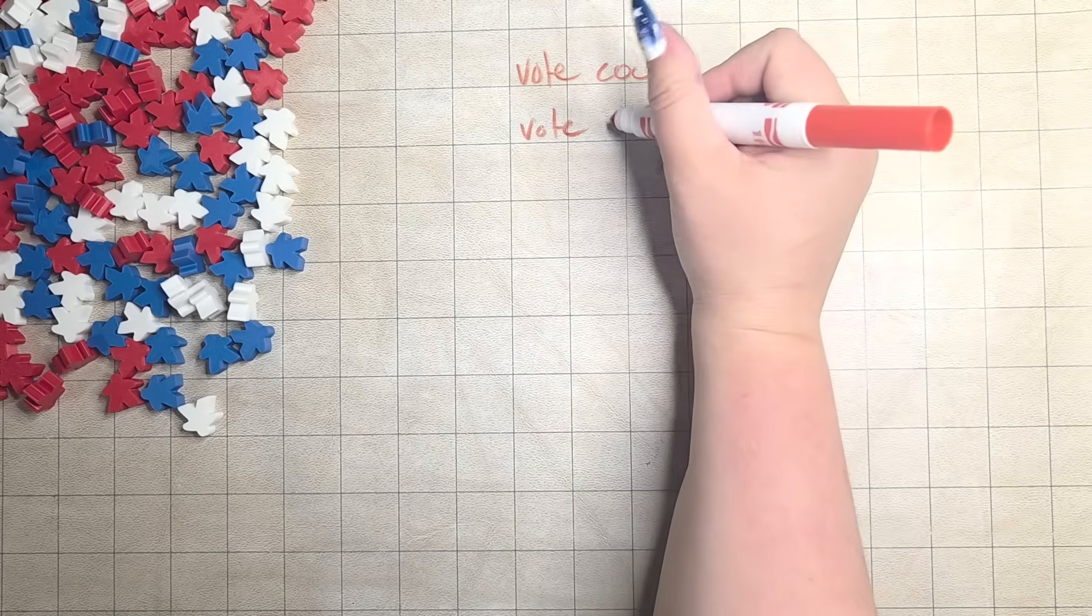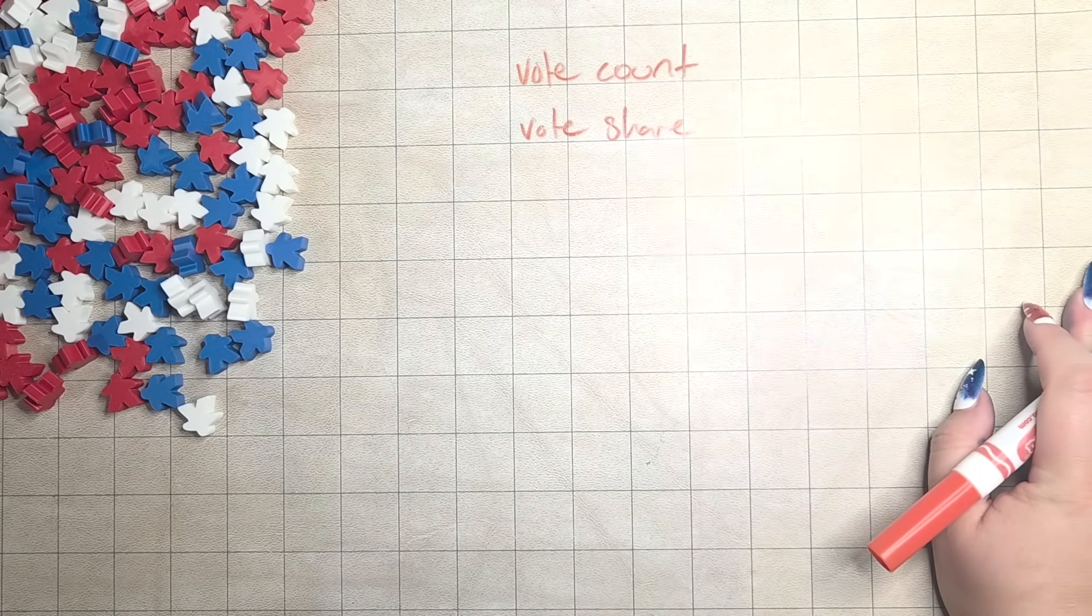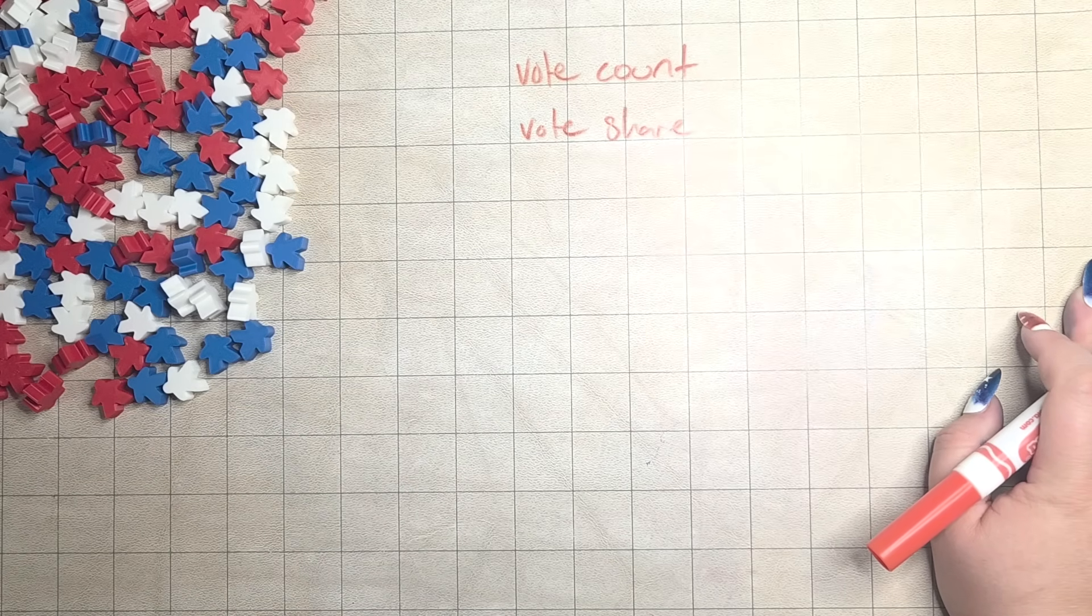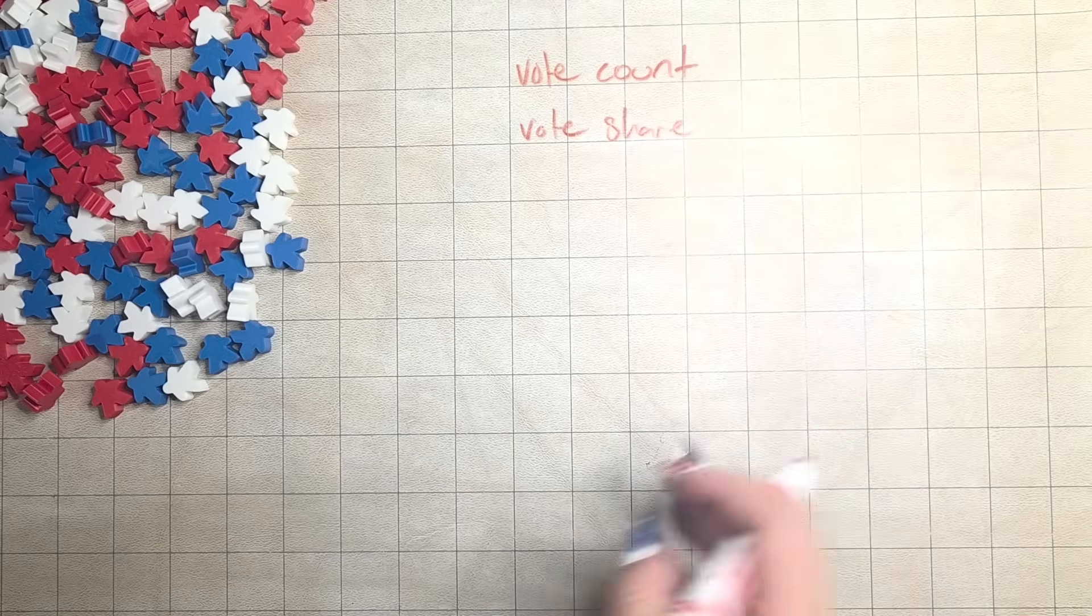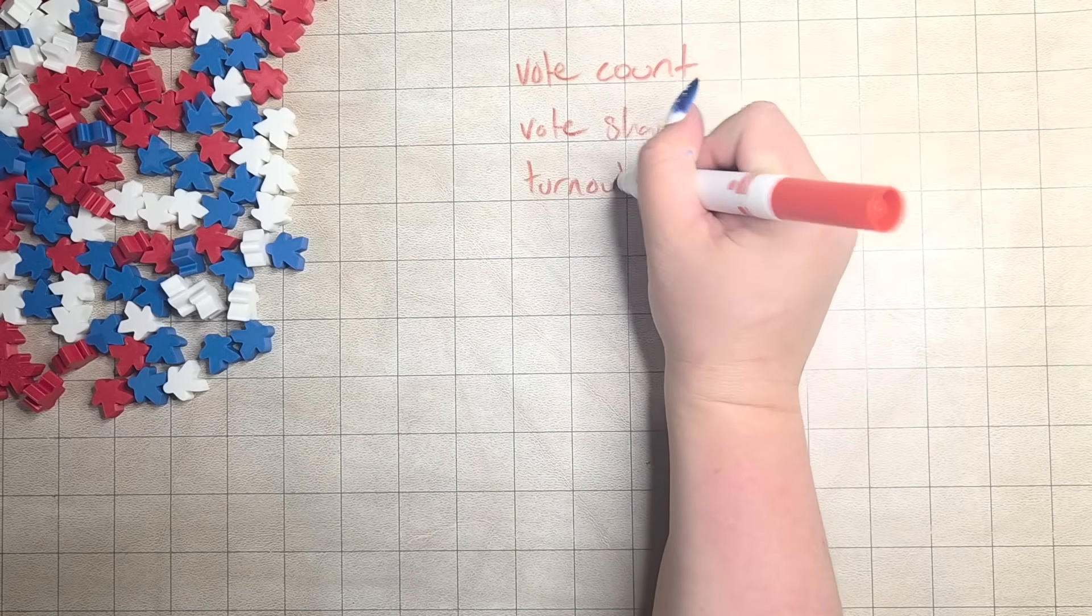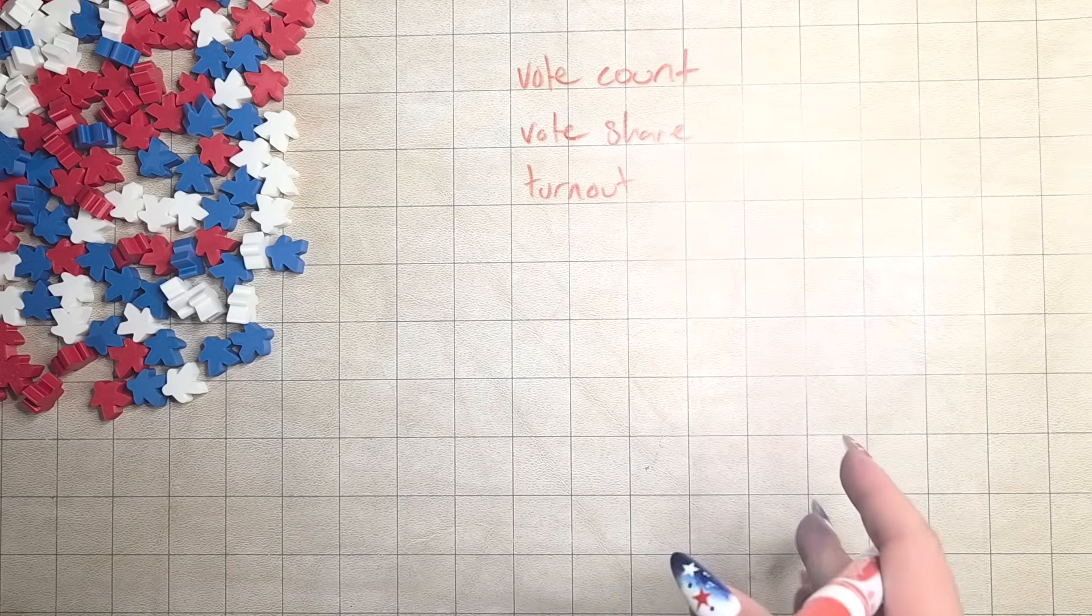Next, we have vote share. For elections where you have multiple candidates or multiple ballot options, the percentage that a given candidate or option receives is its vote share. Lastly is turnout. Turnout is the percentage of eligible voters that cast a ballot within the given election.